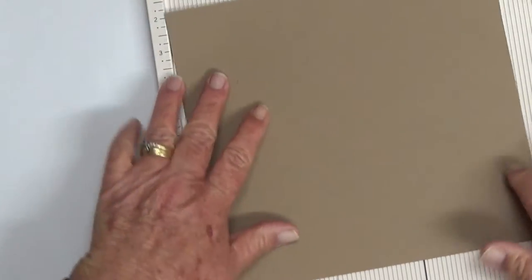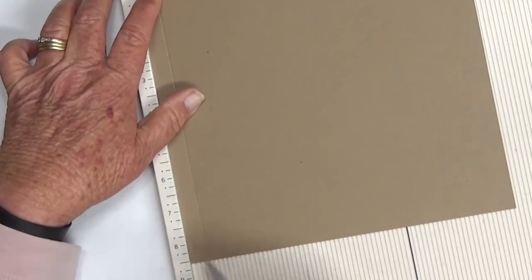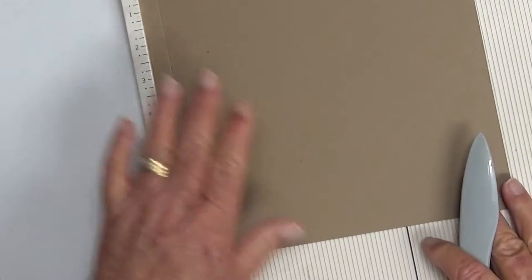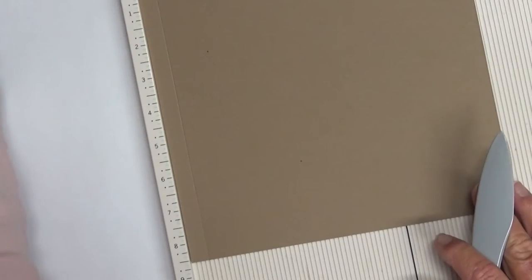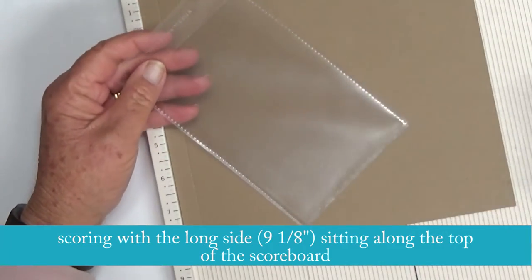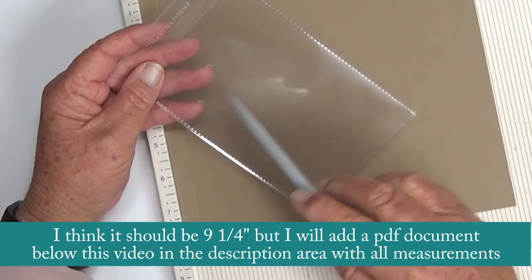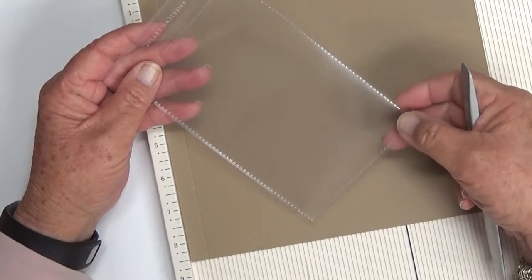What I want to do is score it at a half inch first. Then these actually measure four and a quarter by seven and a quarter I think, but I need a bit more room.